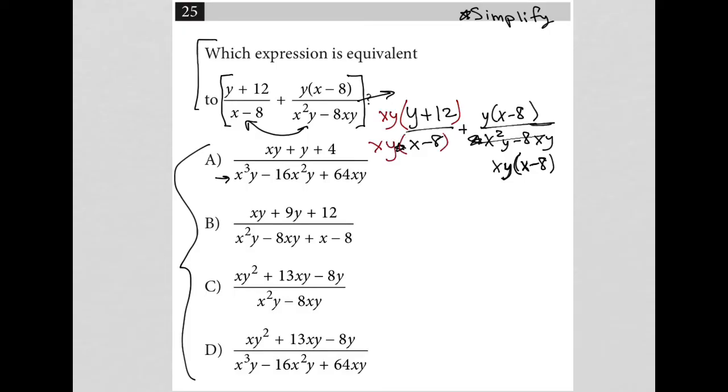That allows me to accomplish having a common denominator for both fractions. So now my numerator, when I multiply this across, would be xy² + 12xy over xy(x - 8) plus y(x - 8) over xy(x - 8). Now I have a common denominator. So in combining these two things together now, my numerators would come together, and I'd have xy² + 12xy + y(x - 8) all over xy(x - 8).